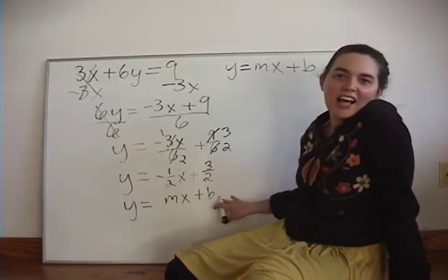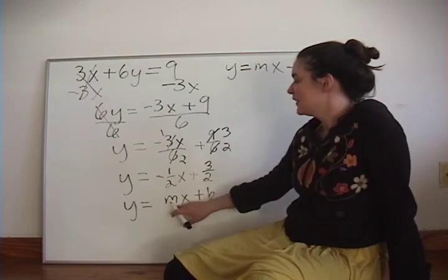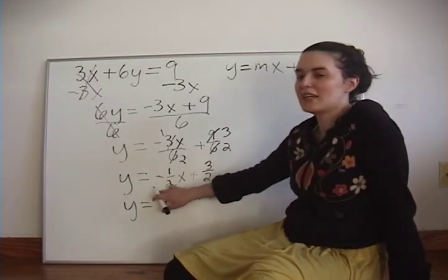Looking at our pattern, we can see the slope, the slope m is negative 1 half.